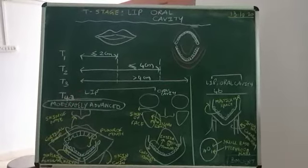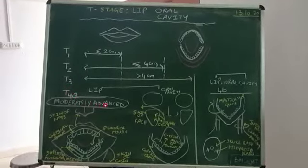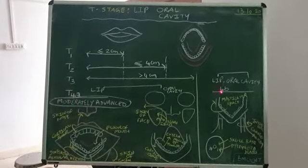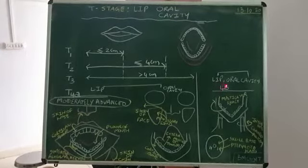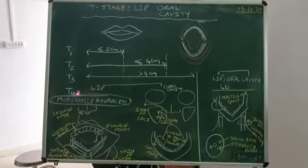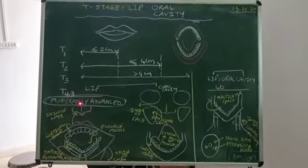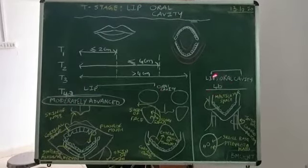And T4, we are having 2 types. That is T4A, which is moderately advanced, and T4B, which is not having any divisions, that is very severely advanced or very much advanced disease. So T4A is having 2 separate classifications here: moderately advanced in the lip and moderately advanced in the oral cavity. Whereas T4B, both are same.